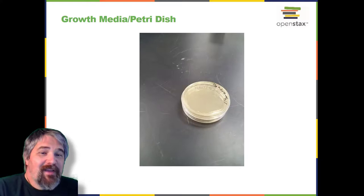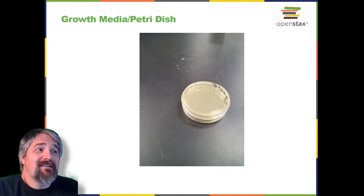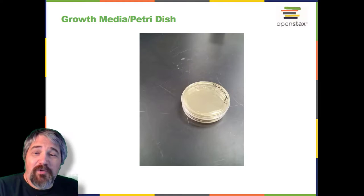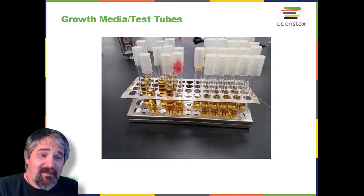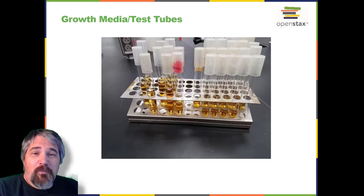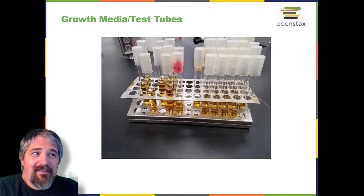Growth media are used to grow microorganisms in a lab setting. Some media are liquids; others are more solid or gel-like. A growth medium provides nutrients including water, various salts, a source of carbon like glucose, and a source of nitrogen and amino acids like yeast extract, so microorganisms can grow and reproduce. Ingredients in a growth medium can be modified to grow unique types of microorganisms. Test tubes are cylindrical plastic or glass tubes with rounded bottoms and open tops, used to grow microbes in broth or semi-solid or solid growth media. Test tubes tend to be glass with loose-fitting caps, while petri dishes tend to be plastic in the microbiology teaching lab.